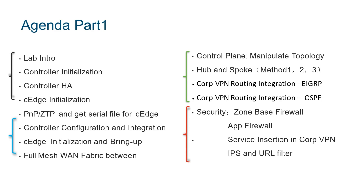The second part is about the controller's HA — high availability. To ensure network high availability, our V-Manage role needs to form a cluster in our entire headquarters and branch office environment. We need to deploy multiple V-Bond and V-Smart devices to achieve controller HA, deploying multiple units to serve the controller's HA function.